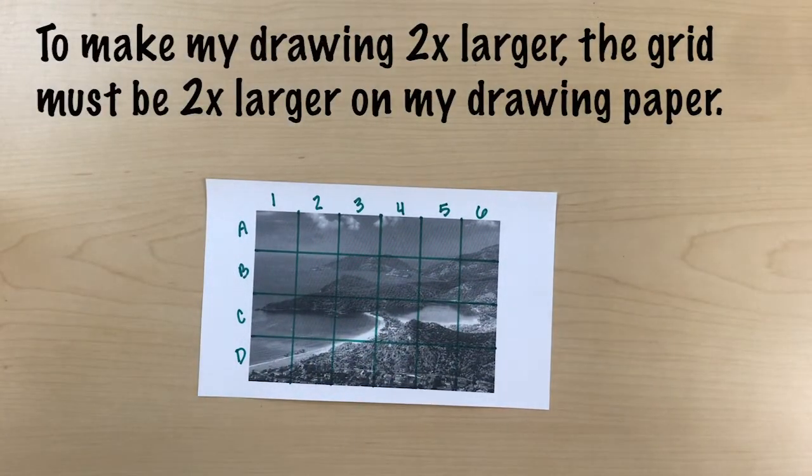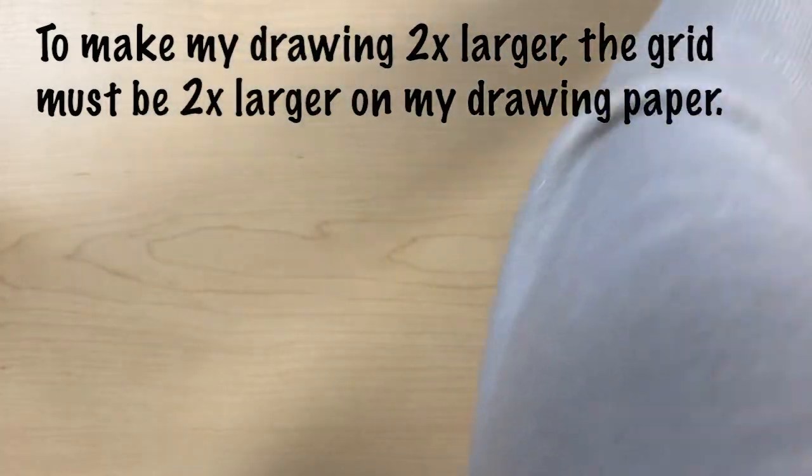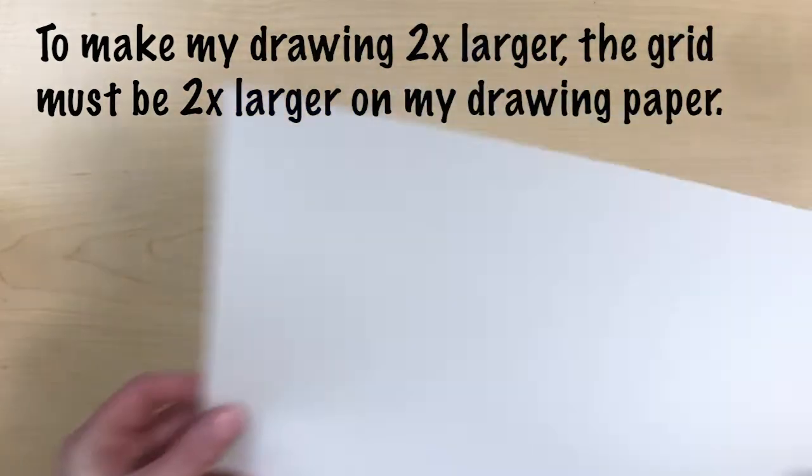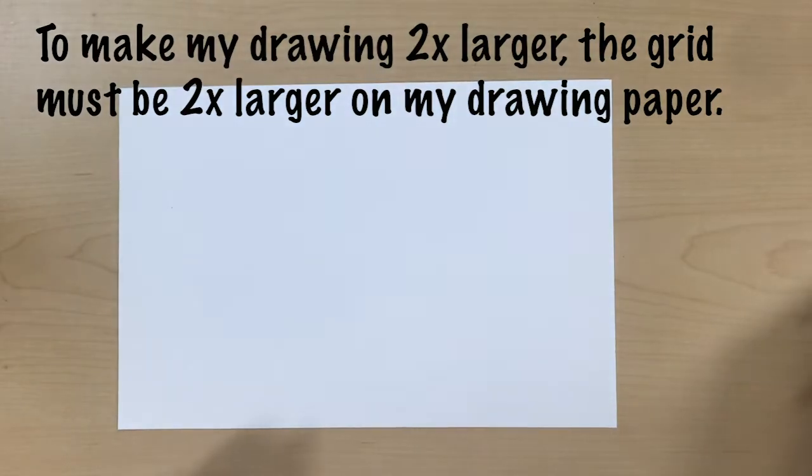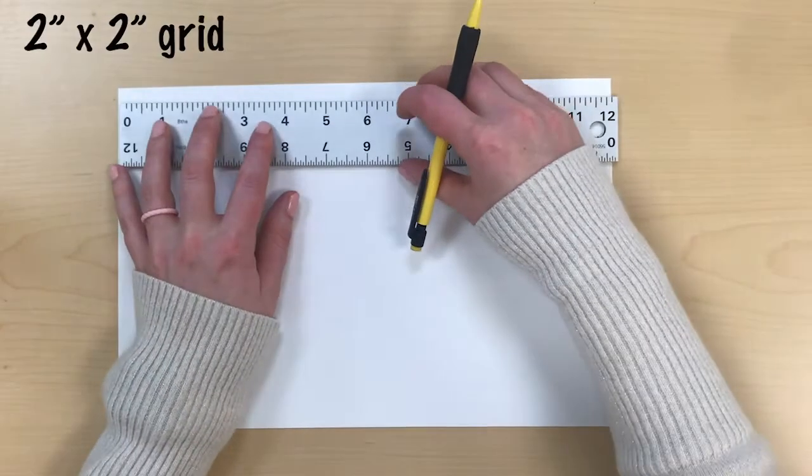Now if I want to make my drawing twice as large, the grid has to be twice as large on my drawing paper. That means my new grid will be two inches by two inches.